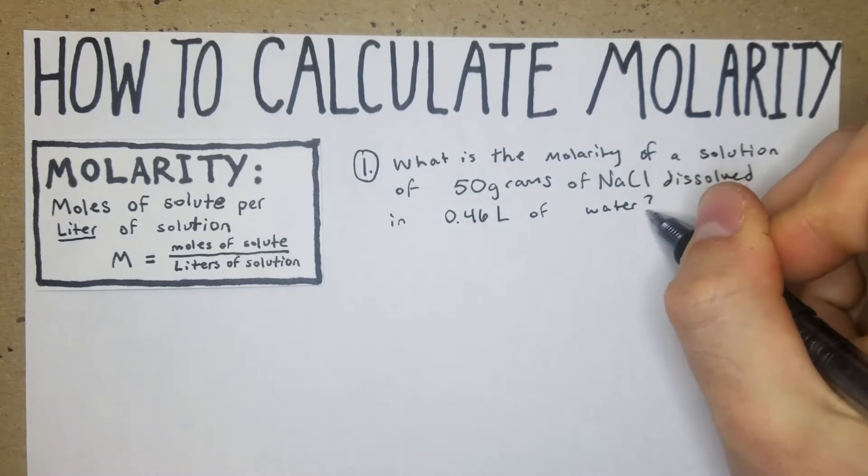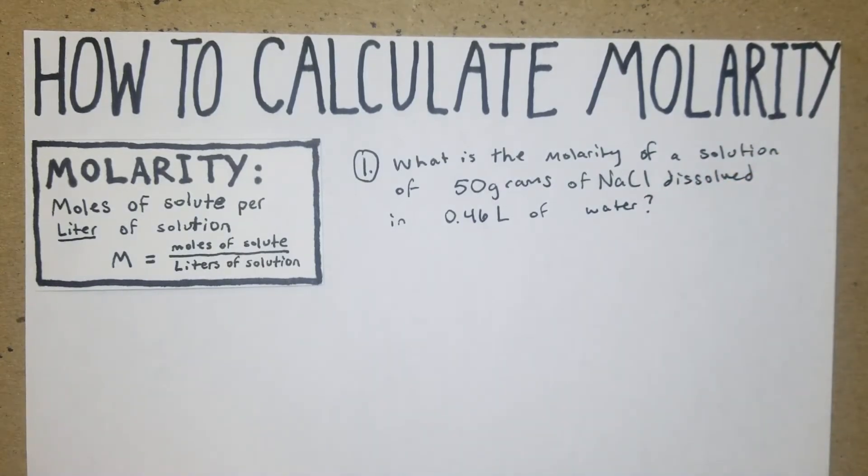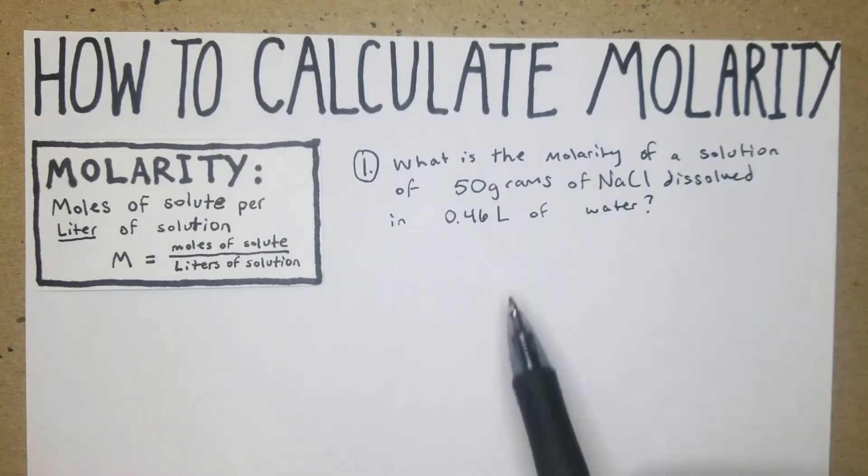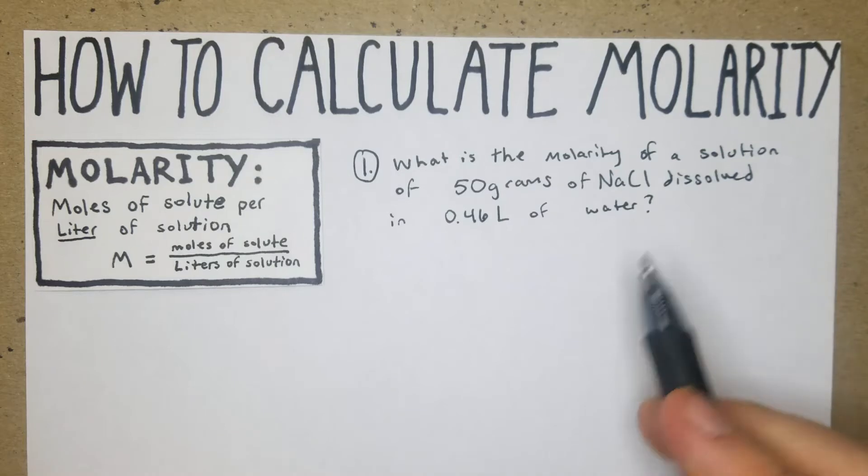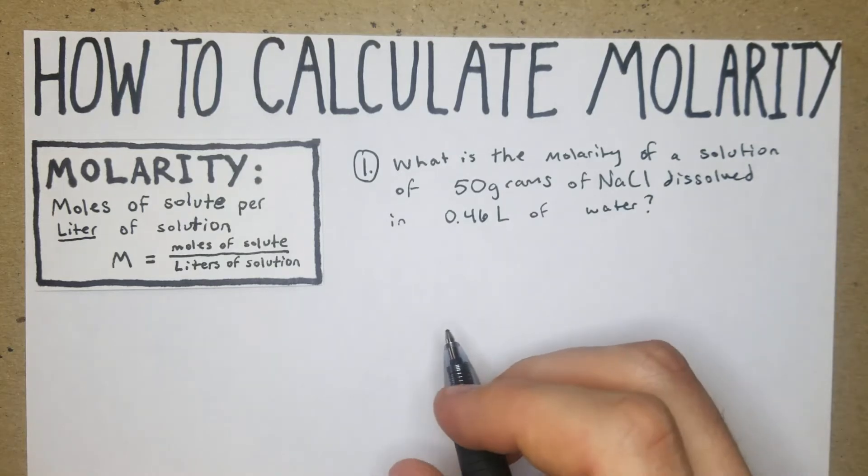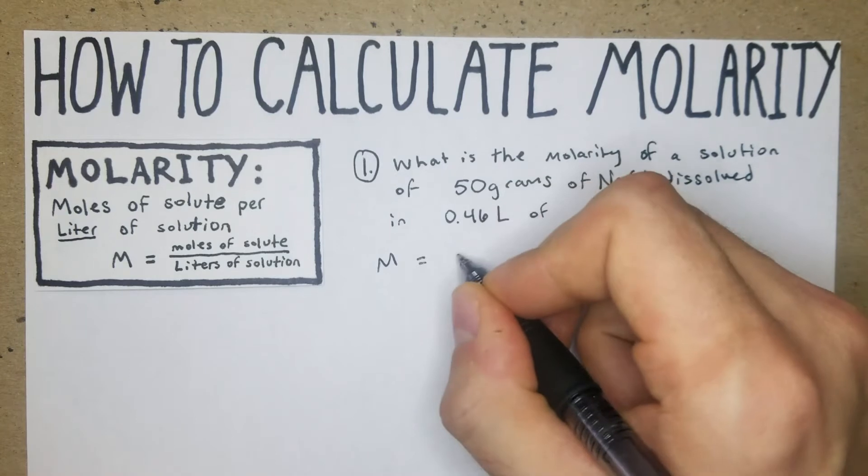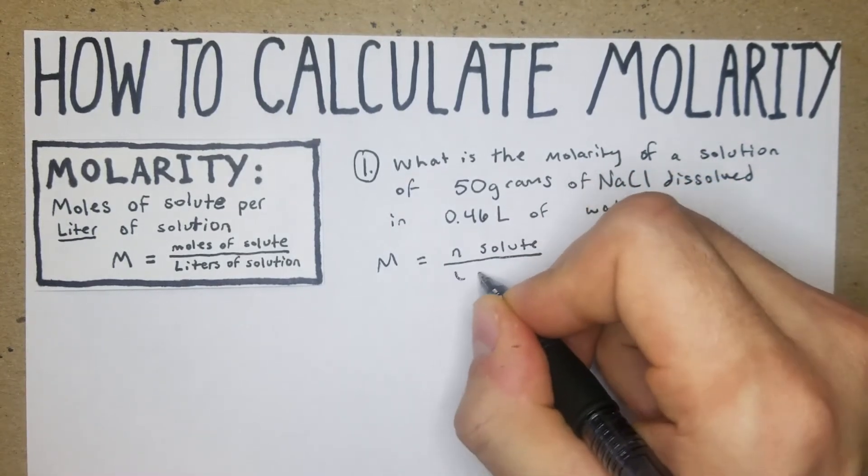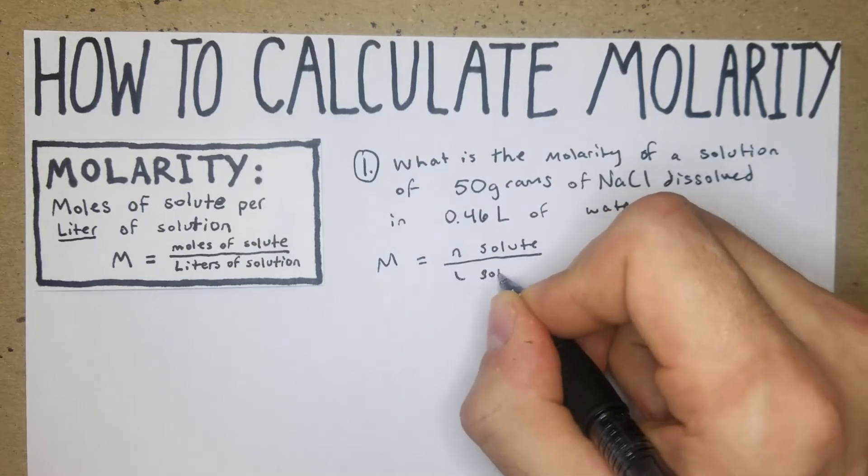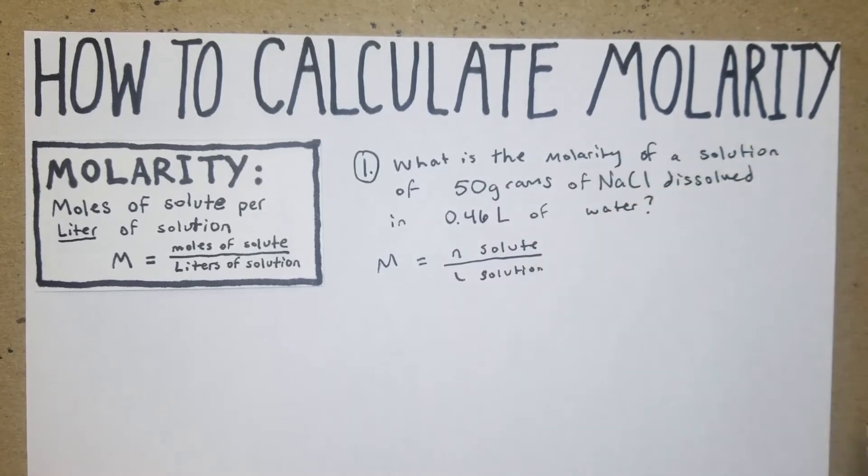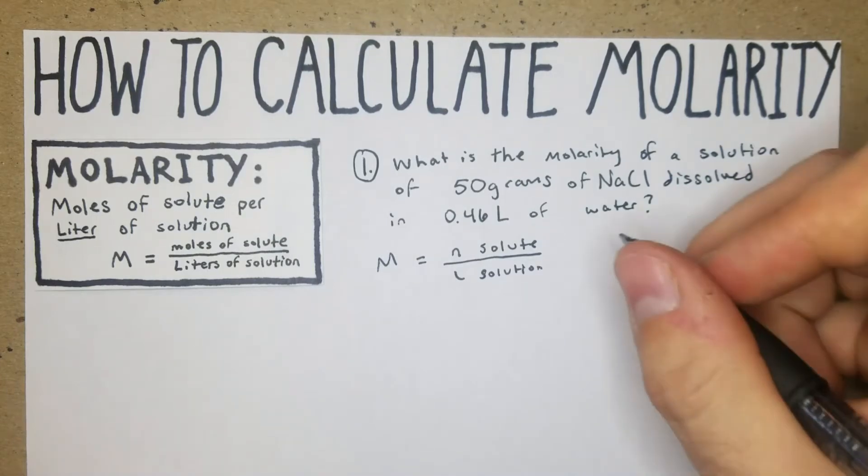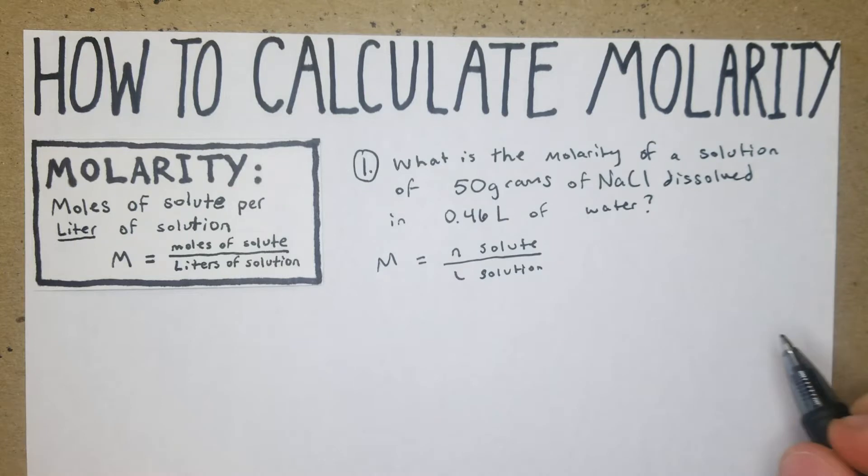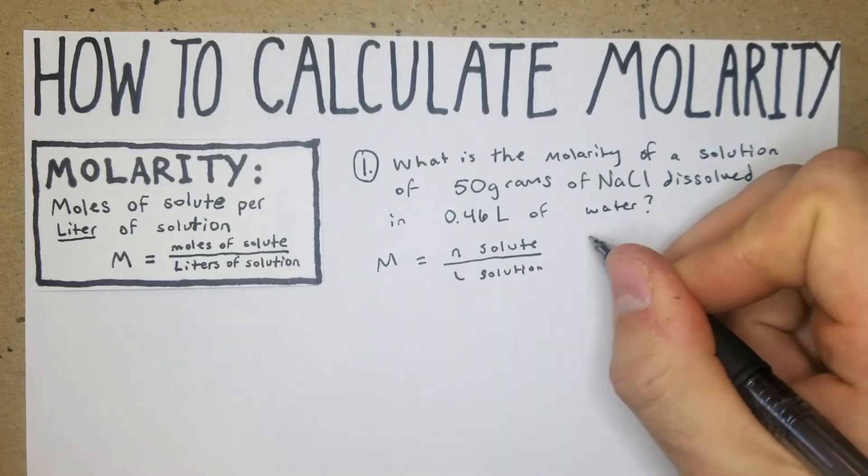First off, you can tell that in this situation the NaCl is obviously going to be the solute and the solvent is going to be the water. Here we have, the first step would probably be - I usually just like to draw out the formula. So here we have the molarity formula. Basically, first things first, we're going to try to solve for n.